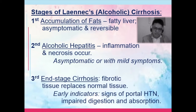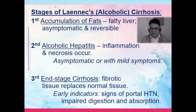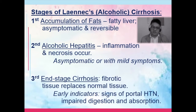On the third stage, end-stage cirrhosis, there's already fibrotic tissue replacing the normal tissues. This is manifested by signs of portal hypertension, impaired digestion, and absorption. For portal hypertension, you may have esophageal varices. Impaired digestion and absorption is usually because of the congestion that occurs in the organs, related to the increase of pressure in the portal vein.